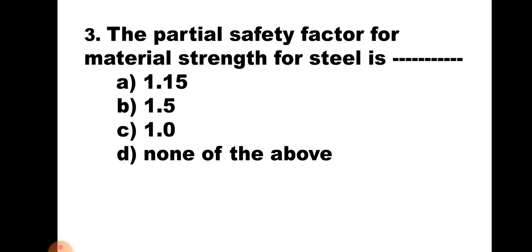Question number 3: The partial factor of safety for material strength for steel is: A. 1.15, B. 1.5, C. 1, D. None of the above. For steel, the partial factor of safety is less than that of concrete because of the greater reliability in production quality, and hence it is 1.15. The correct answer is A. 1.15.